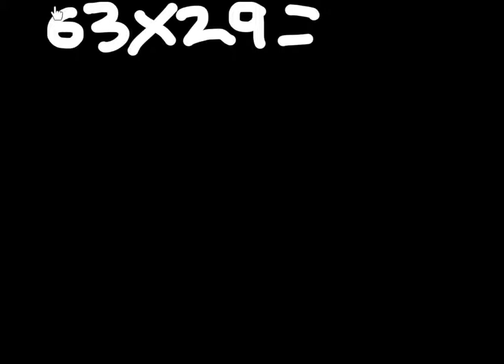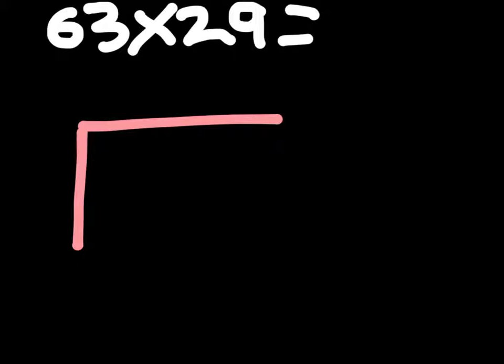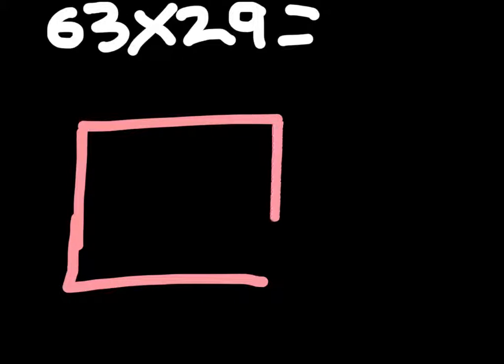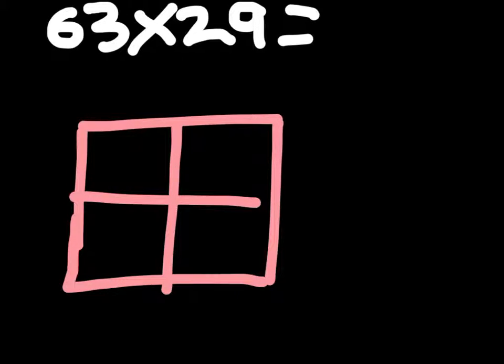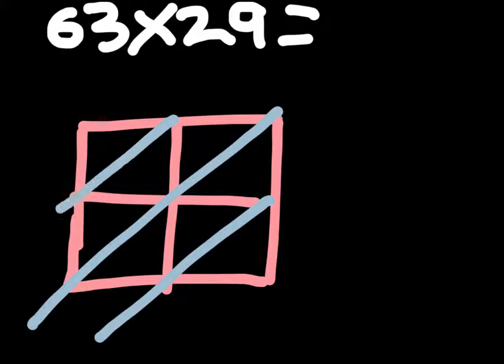So 63 times 29. That's two by two, so we need to draw a little box kind of like a window. And then you see those little squares? Well you have to put a line there, there, and there. So three lines, like this, there and there.